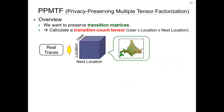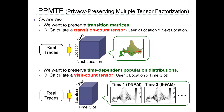I begin with its overview. First, to preserve transition matrices, we calculate a transition count tensor composed of user, location, and next location. This tensor includes a transition matrix for each user, so it preserves information about movement patterns. Second, to preserve time-dependent population distributions, we calculate a visit count tensor composed of user, location, and time slot, which includes a visit count for each user, location, and time slot. So this tensor preserves information about time-dependent population distributions.